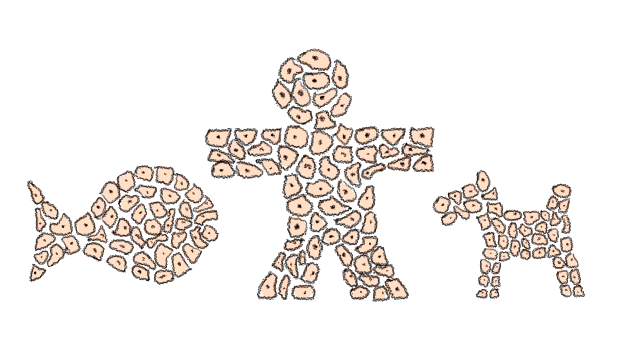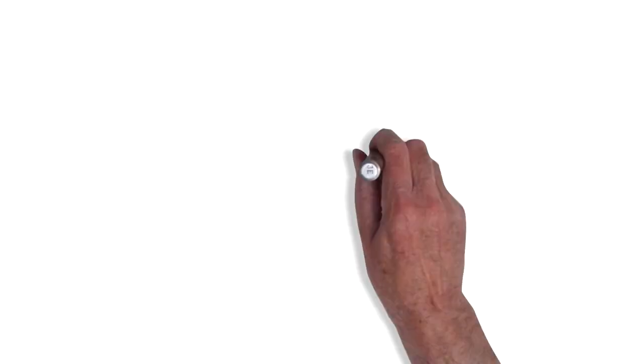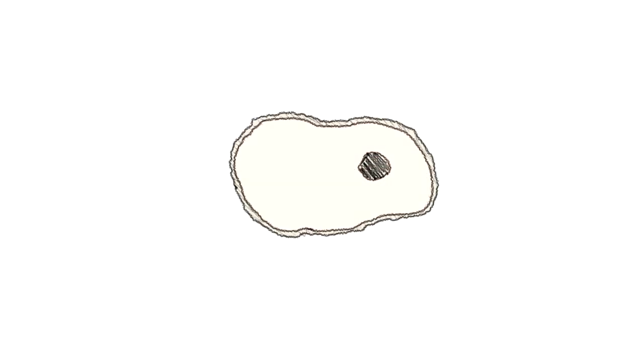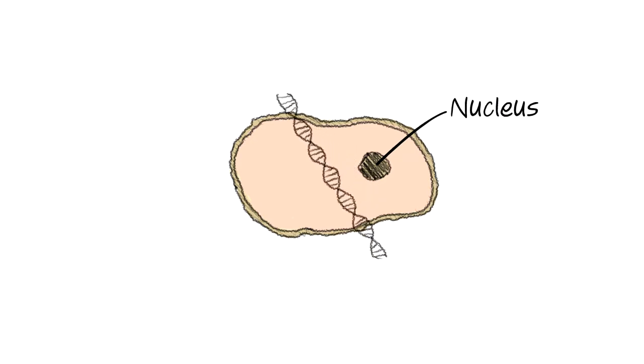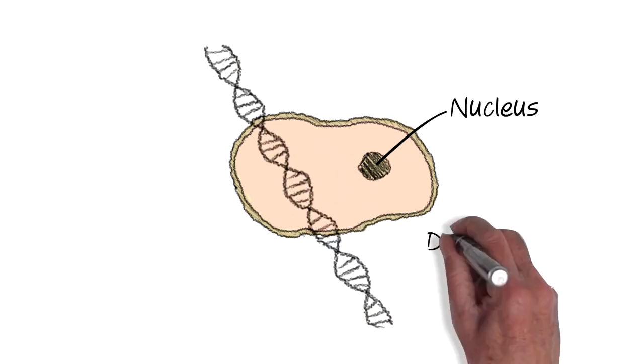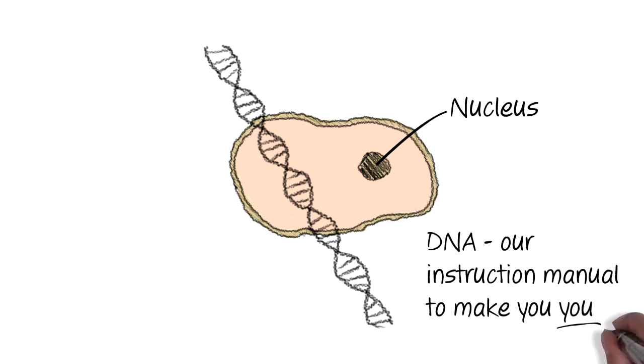All living things are made of cells. They're like small packets of life. Inside each cell is a nucleus where the instructions are stored. This instruction manual is called DNA and contains all the information needed to make you, you.